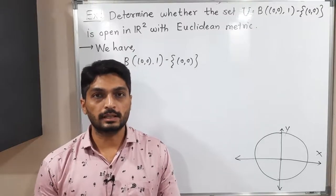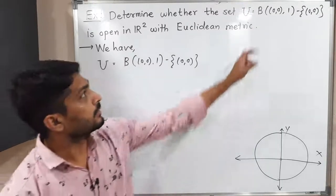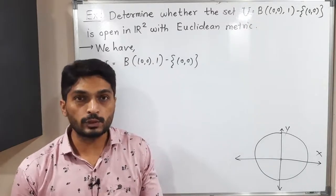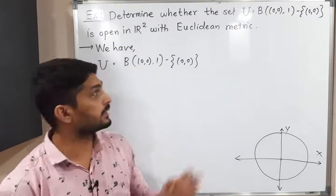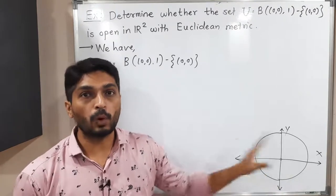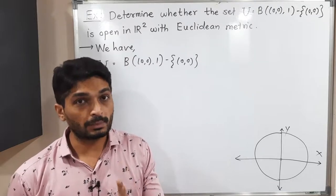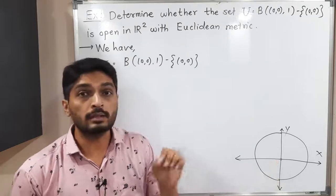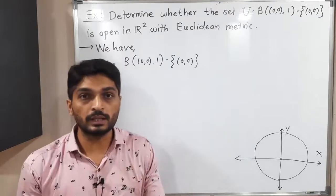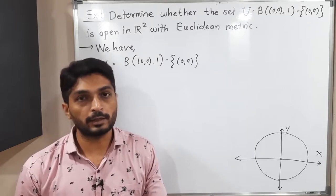Let us discuss this example. In this example, we have a set U which is equal to the open ball with center (0,0) and radius 1, minus the singleton {(0,0)}. In the diagram, you can see we have an open ball with center (0,0) and radius 1, but the center (0,0) is removed from the ball. So this is set U, and we have to prove that it is an open set with the Euclidean metric.